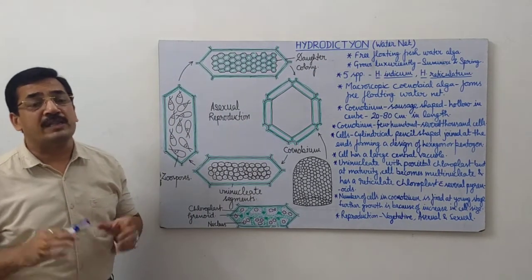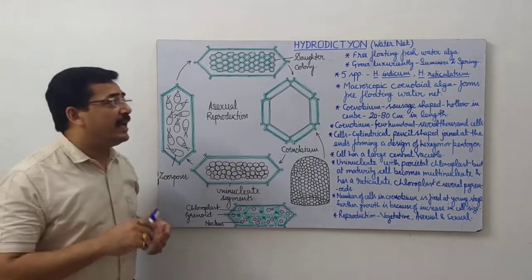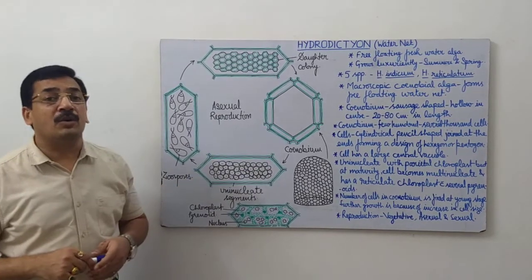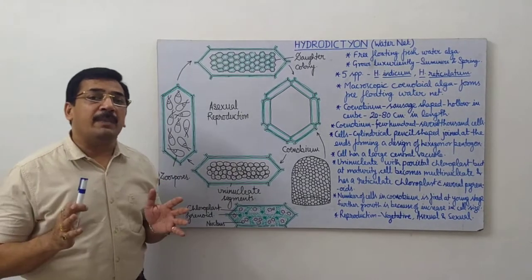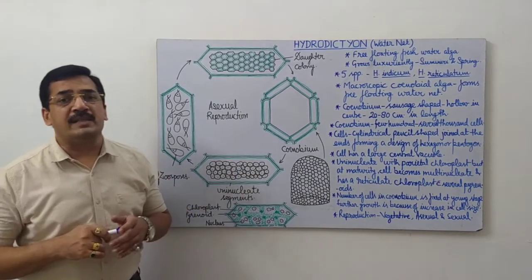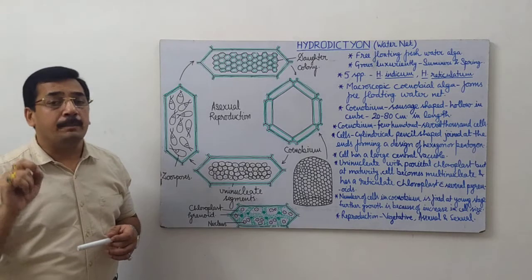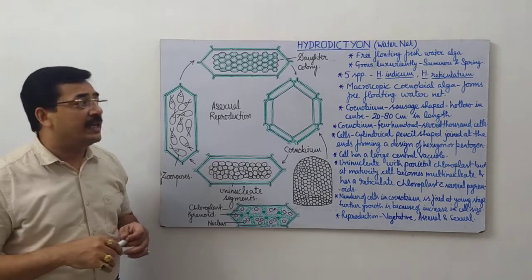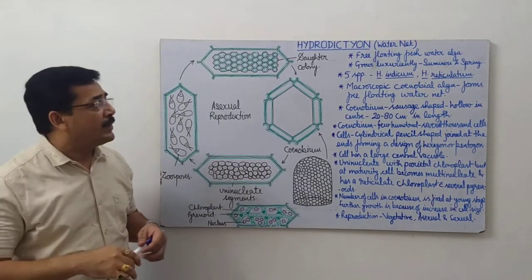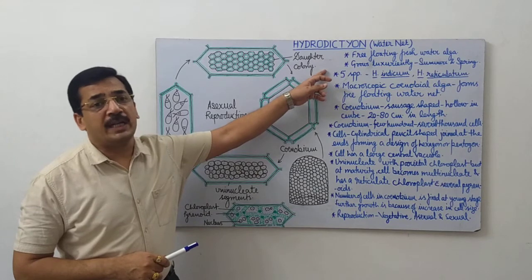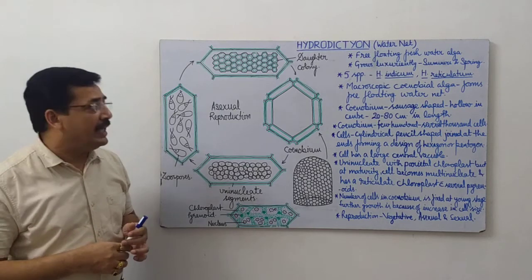So Hydrodictyon is commonly called as water net. This alga is the member of order Chlorococcales of class Chlorophyceae. All members of class Chlorophyceae contain major pigments chlorophyll A and chlorophyll B, and the reserved food material is always starch. It is a free floating freshwater alga that is found in pools, ponds, and even in lakes.